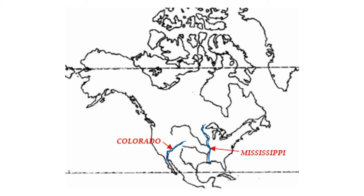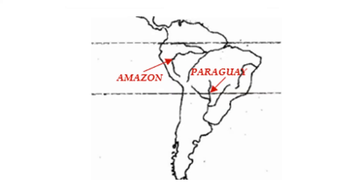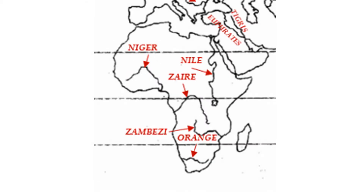Let's go to South America. In South America there are two big rivers. One is the Paraguay River — here, this middle one. I'll take a lighter color; I think it will be better. And this one in the middle is the Amazon River. So these are the two rivers in South America.